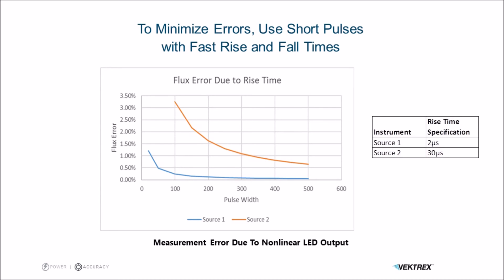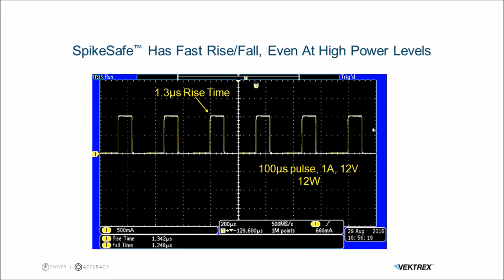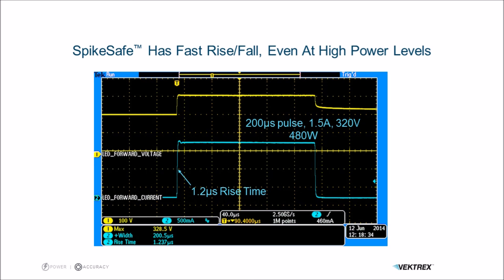Here are some examples of what you might look for. This is a SpikeSafe operating at a 12 watt power level, and you can see it has a 1.3 microsecond rise time and similar fall time — so that's very good. Here's another more powerful pulse at 480 watts, and again the rise time is under 2 microseconds — quite good, nearly an ideal pulse.